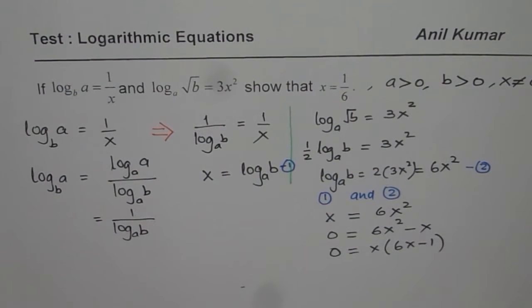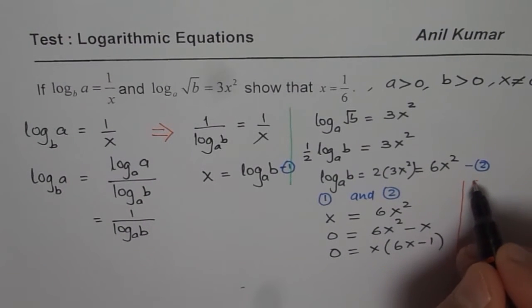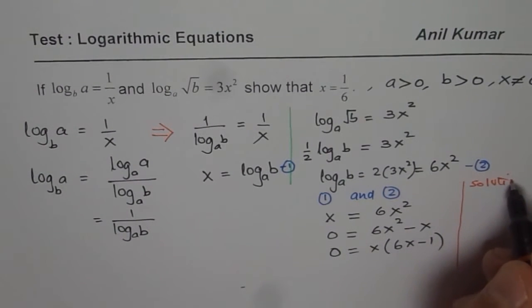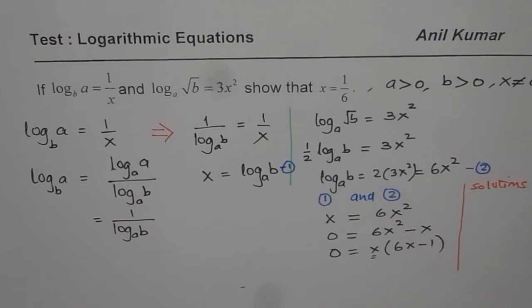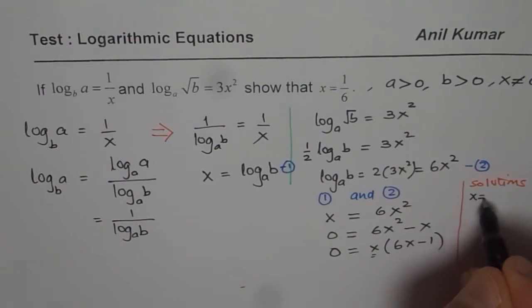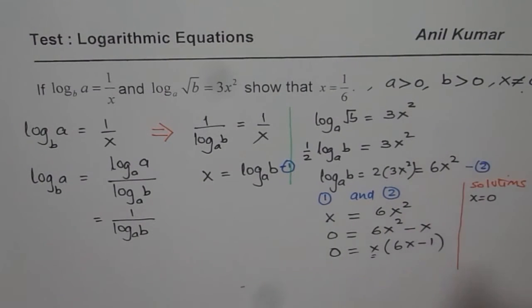Now, can you tell me, what is the solution of this equation? Now, this equation's solutions are 2. One solution is that x could be equal to 0. Well, that is not possible.